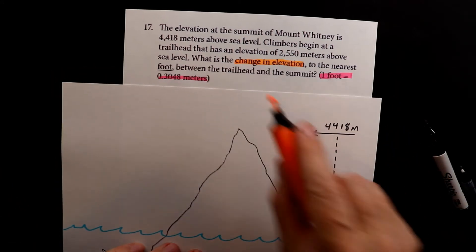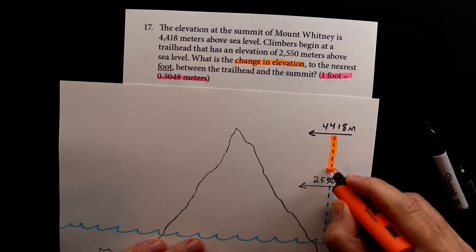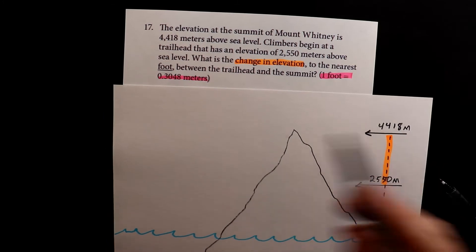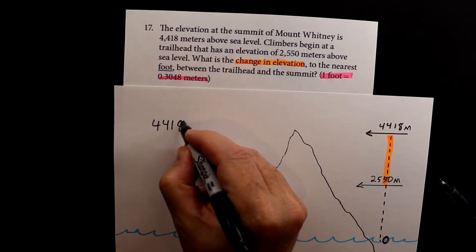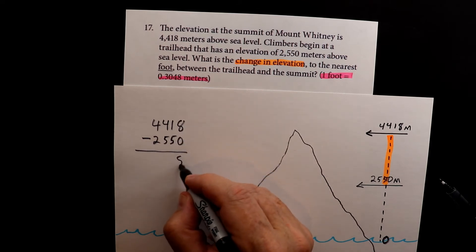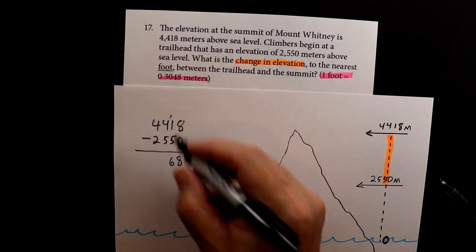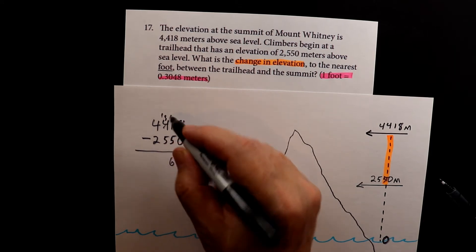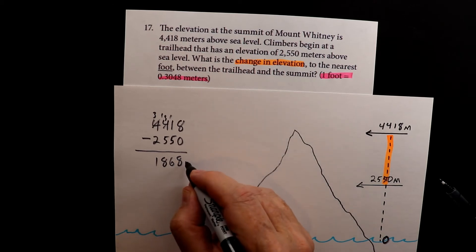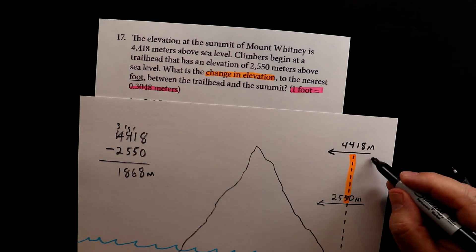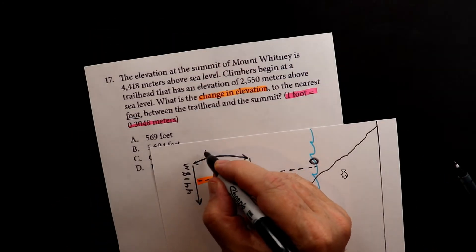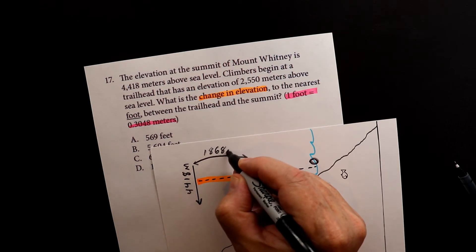So we have to find the difference — the change in elevation is the distance between the trailhead and the summit. That's going to be a subtraction problem: 4,418 minus 2,550. 8 minus 0 is 8, 11 minus 5 is 6, 13 minus 5 is 8, and 3 minus 2 is 1. So there's 1,868 meters from the trailhead to the summit.